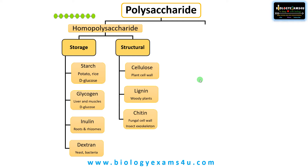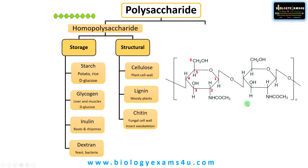The next structural homopolysaccharide is chitin, present in fungal cell walls and also in the exoskeletons of insects, acting just like an armor. It is made up of N-acetylglucosamine monomers linked by beta-1,4 glycosidic bonds. It is a very tough and fibrous material forming the exoskeletons of insects and crustaceans, as well as the fungal cell wall.